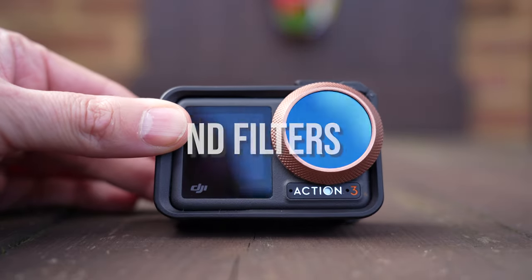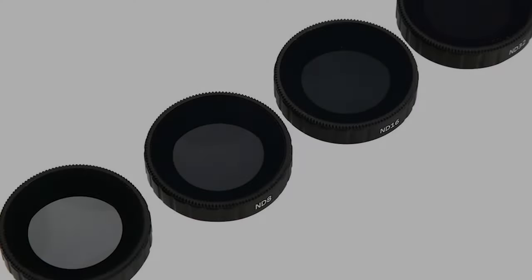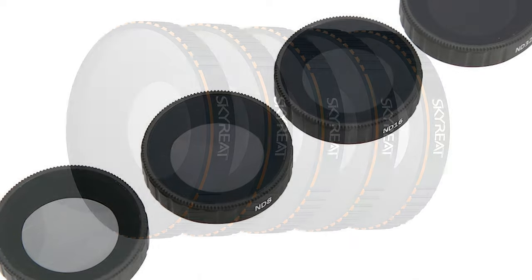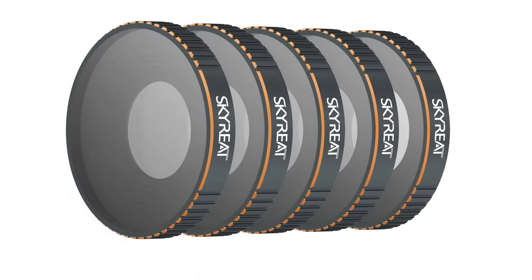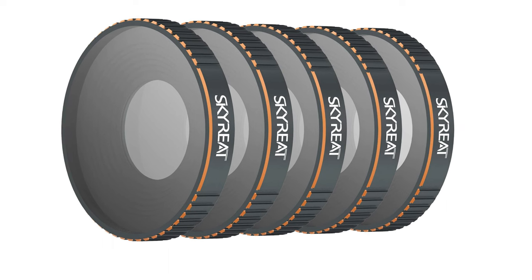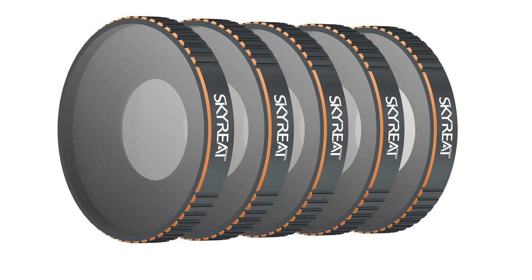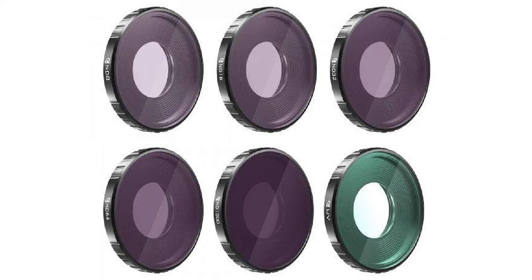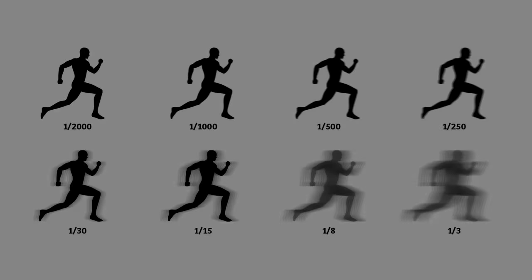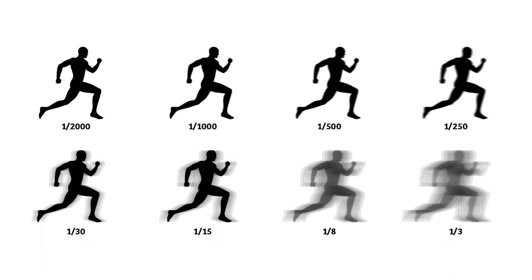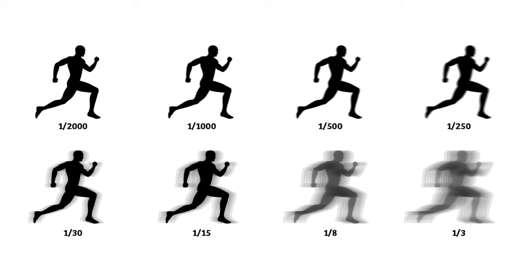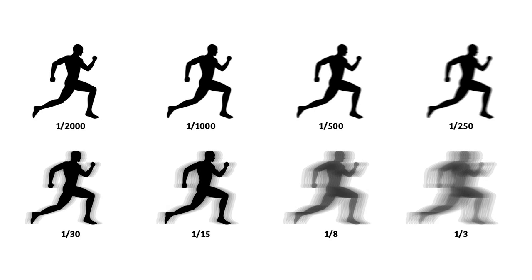Let's start off by looking at ND filters. ND filters are designed to restrict the amount of light that enters your camera. They come in different strengths — the stronger the ND filter, the more light it restricts. Why do you want to restrict the amount of light entering your camera? Ultimately, it's to take control of your shutter speed. Our shutter speed in partnership with our frame rate dictates how much motion blur is applied to an object when in motion.